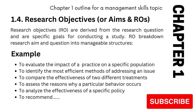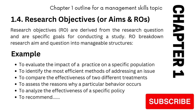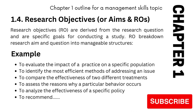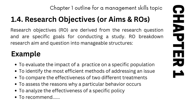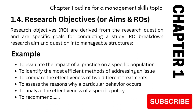Then move into your aims and objectives. Depending on your institution, it could be aims and objectives or just objectives. What you're doing is breaking down your research question into manageable chunks. You can have four or five objectives listed in bullet points — for example: to evaluate the impact of a practice on a specific population; to identify the most effective methods of addressing an issue; to compare the effectiveness of something; to assess the reasons; to analyze. The last objective should always be 'to recommend.' Also be careful with your word choices — words like assess, compare, evaluate, and identify tend toward quantitative or mixed methods, while analyze can be qualitative or both.